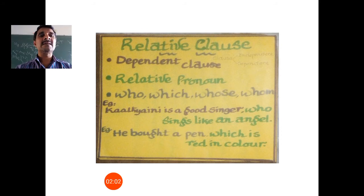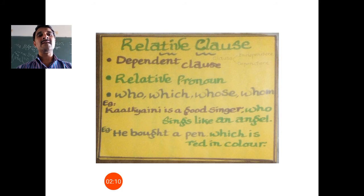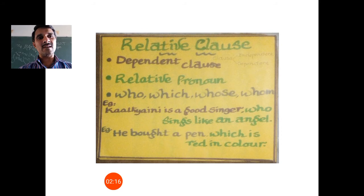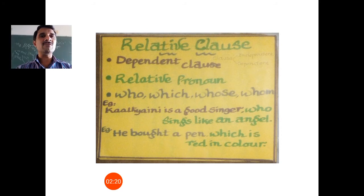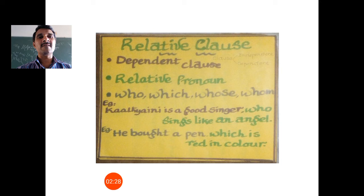Likewise, a relative clause is also known as a dependent clause, meaning it doesn't have independent sense or meaning. Unless it depends on an independent clause, it doesn't have complete sense. A relative clause combines with relative pronouns: who, which, whose, and whom.